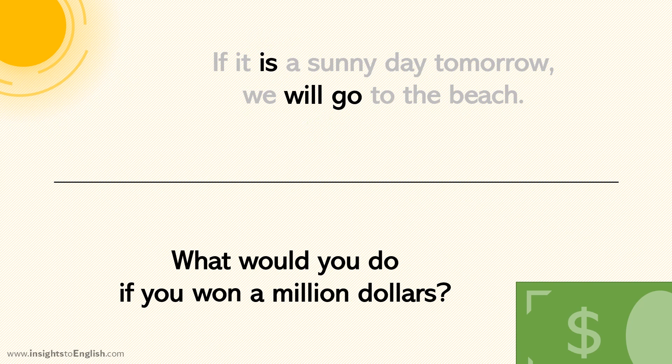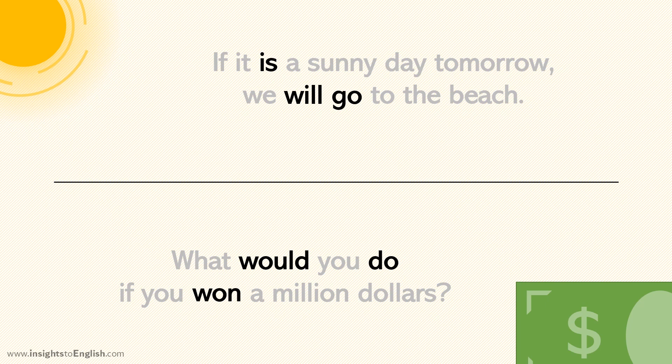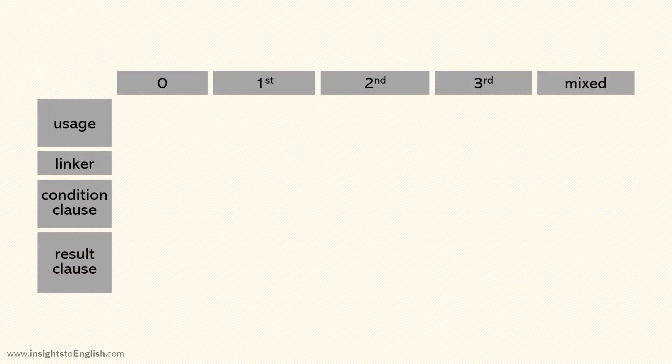What about the next sentence? The verbs are would do and won. We often use would for conditionals. Wait, hold on. The verbs are different tenses again. How do we know which tenses we're supposed to use? That's a great question. And when do we use would? It all depends on which type of conditional we use. We can find the answers to your questions in a table.